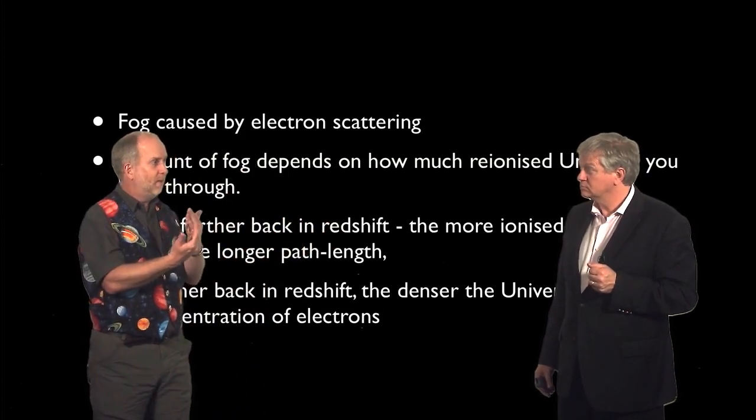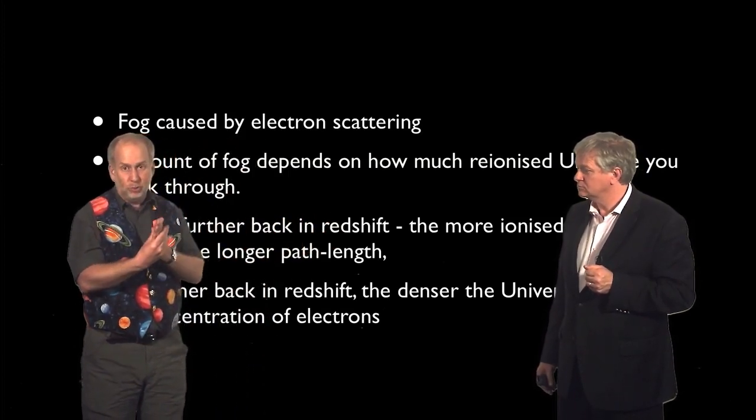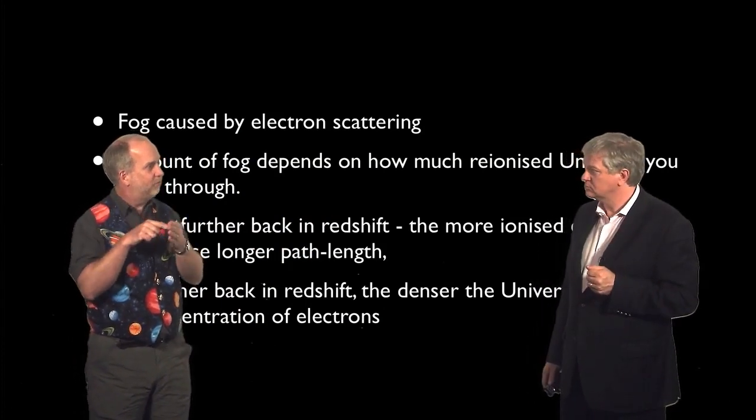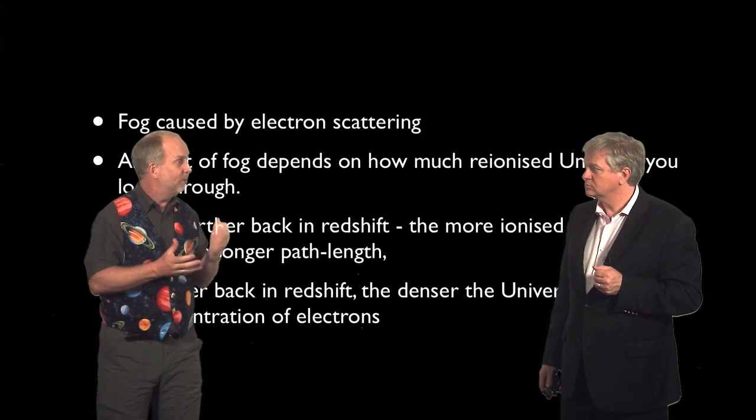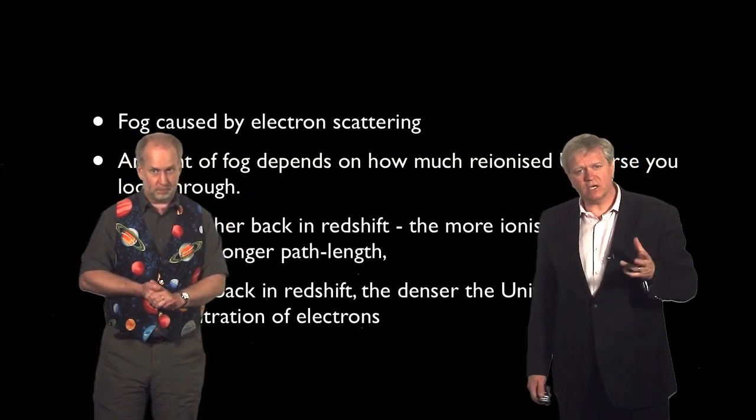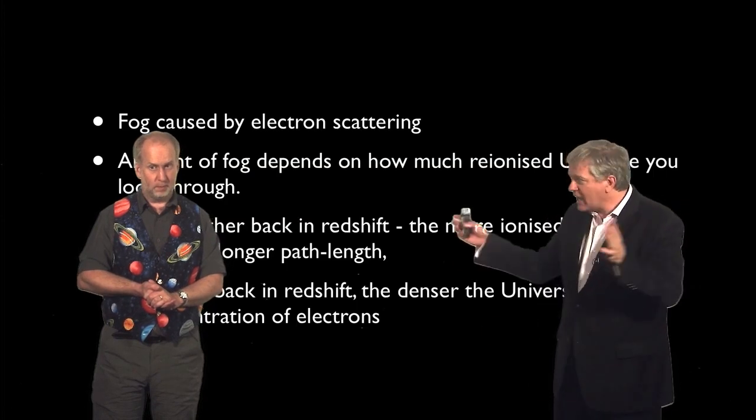So it turns out we need these electrons to be produced, as I say, the gas to be ionized, pretty early, while the density is still high enough to intercept a fair fraction, 9% of the microwave background photons.